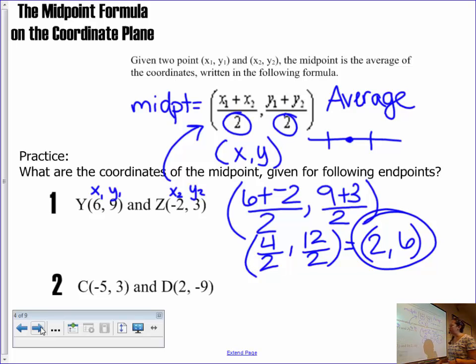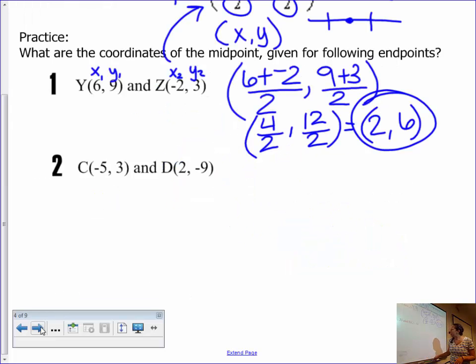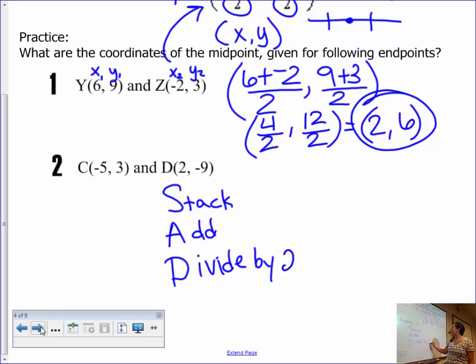All right, now I like to think of midpoint, while we are really excited about using it, as SAD. And this is what I mean by it. So we're going to make this into an acronym stack so that my x's and my y's line up on top of each other. And then we're going to add straight down, and then I'm going to take the result of that and divide by 2. So we're still doing the same process, it's just going to be organized a little bit differently. So I'm going to take point C, negative 5, 3, and I'm going to stack point D right underneath of it to negative 9.